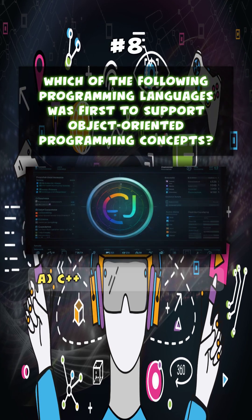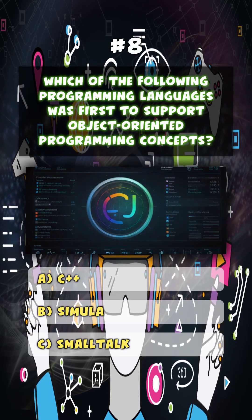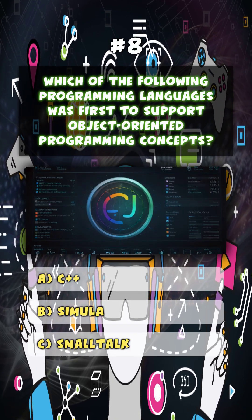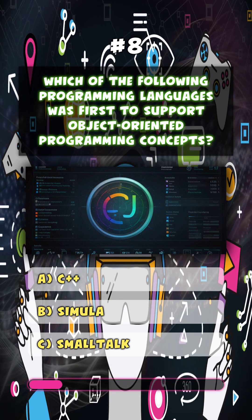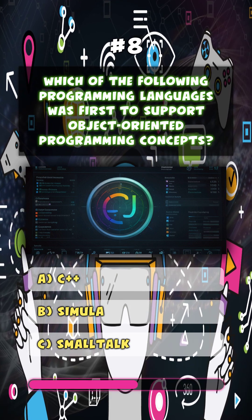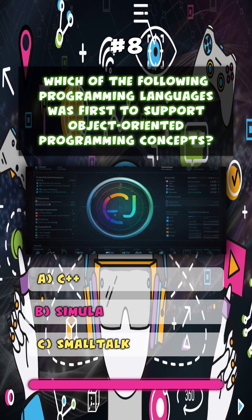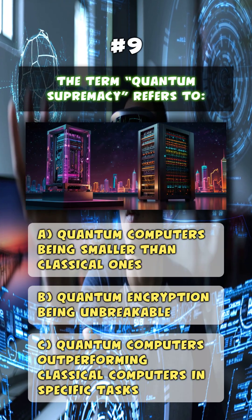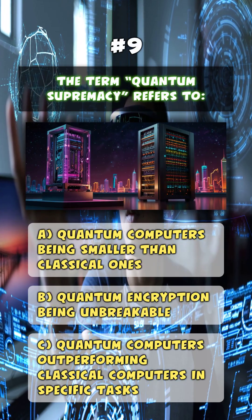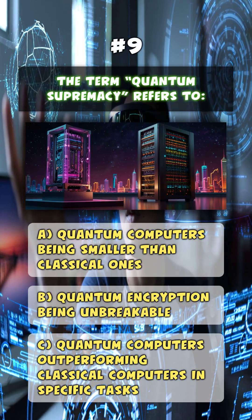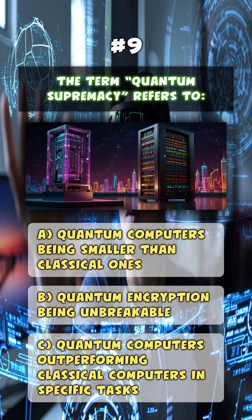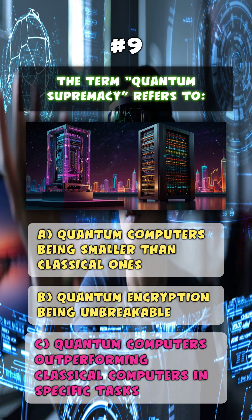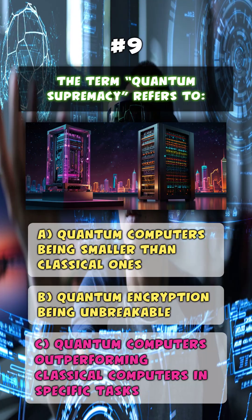Which of the following programming languages was first to support object-oriented programming concepts? B. Simula. The term quantum supremacy refers to — C. Quantum computers outperforming classical computers in specific tasks.